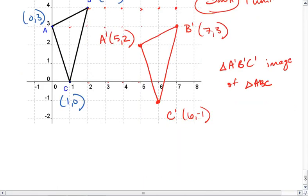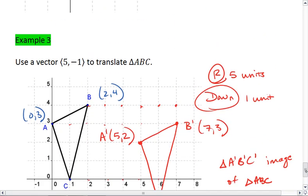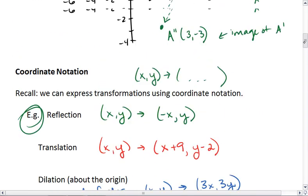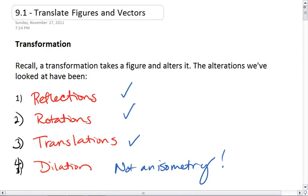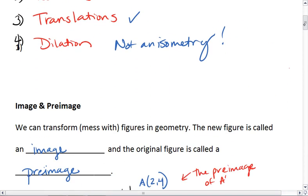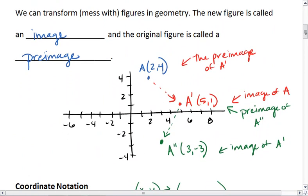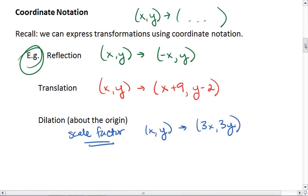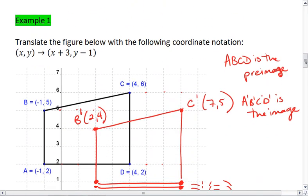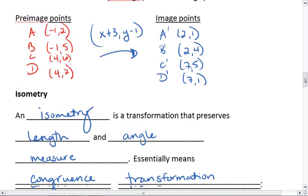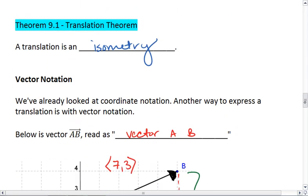Hopefully that made sense to you. If it did, that's wonderful. If not, go back and review the parts that are still confusing. Make sure you understand transformations in general, the terms image and preimage, how to use coordinate notation, what an isometry is, and then also vectors.